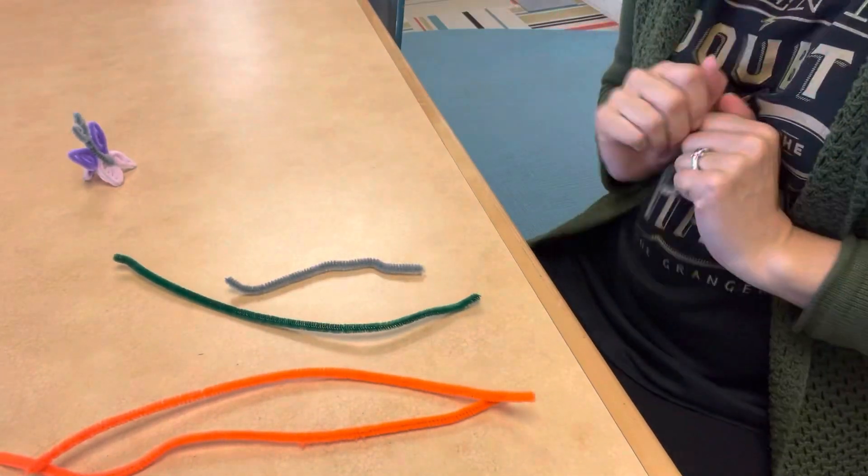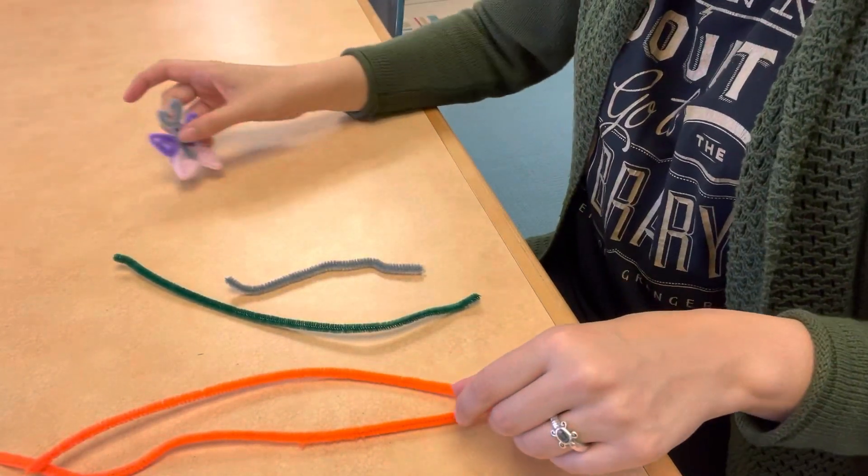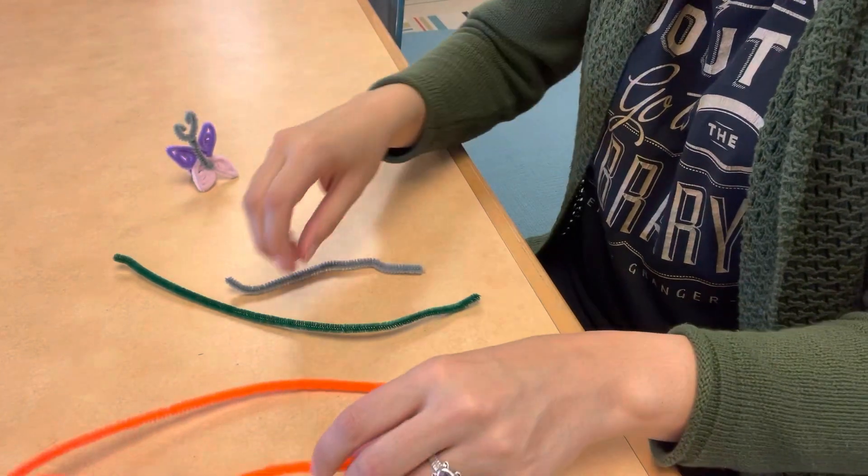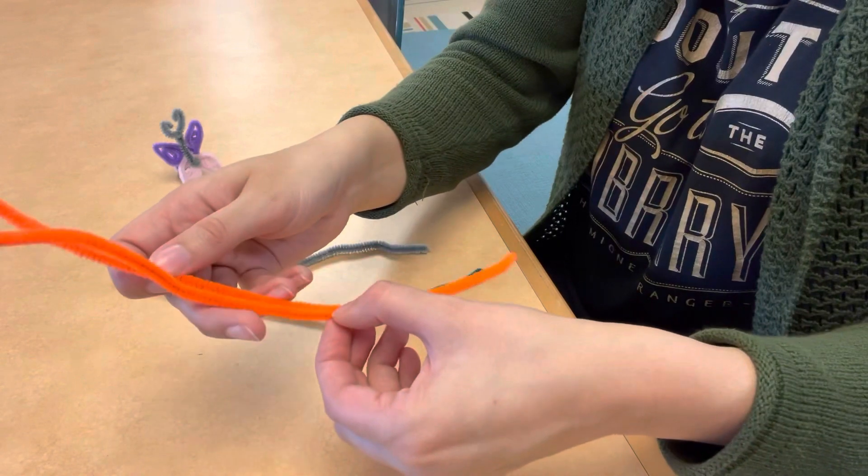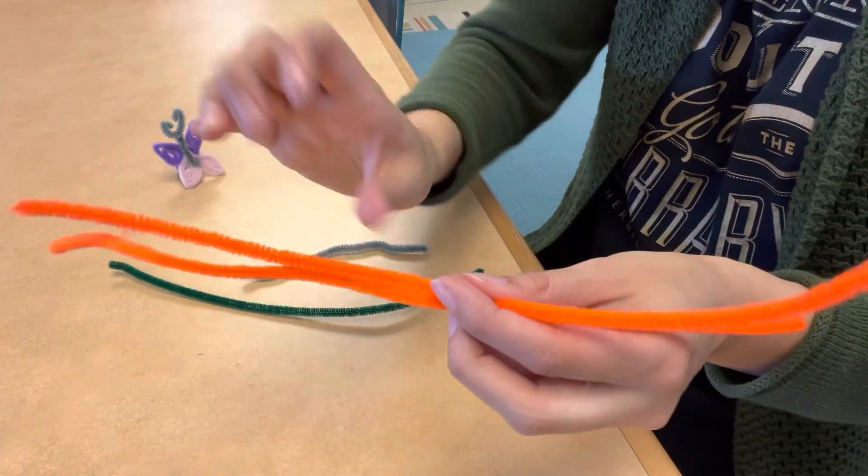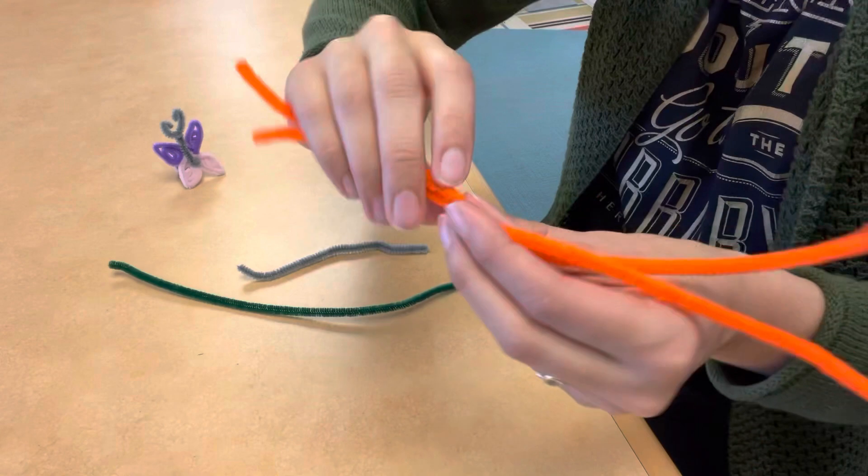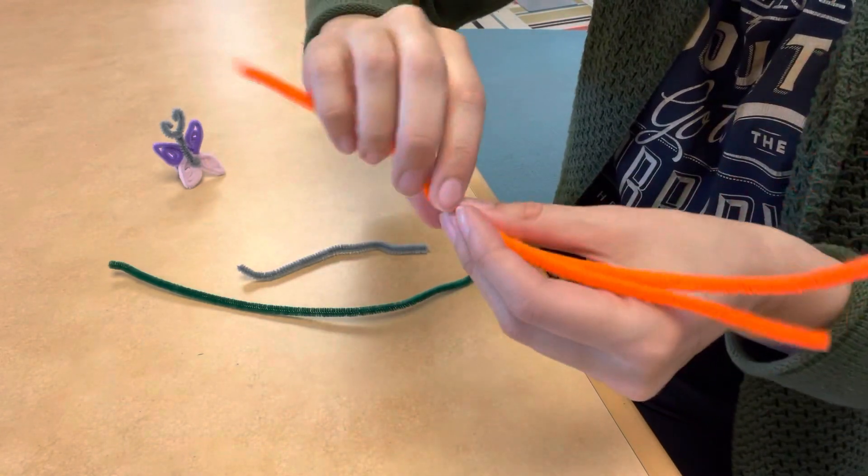And for the mariposa bracelet, you're pretty much going to be doing the same thing as making the ring, except there's just a few changes. So just like the other one, you begin with two long pipe cleaners and you twist them just like this in the center.